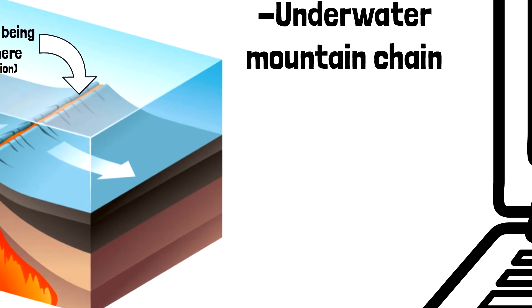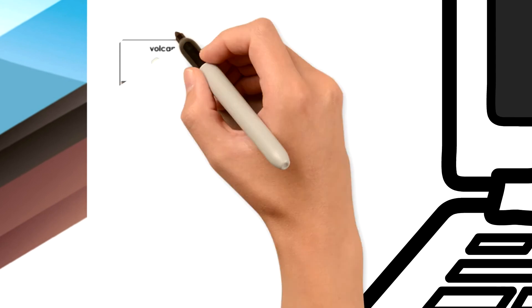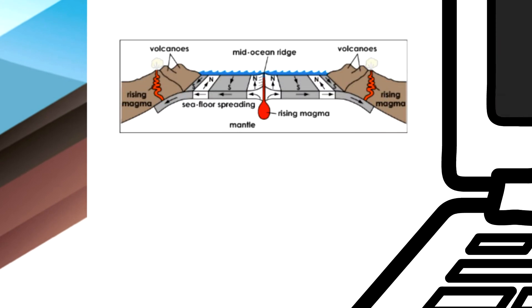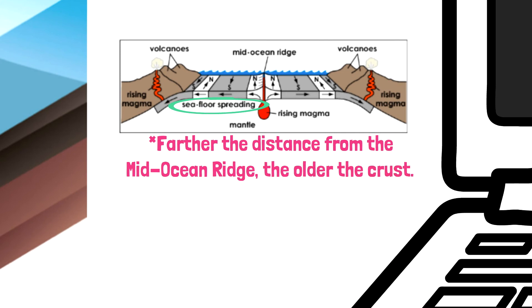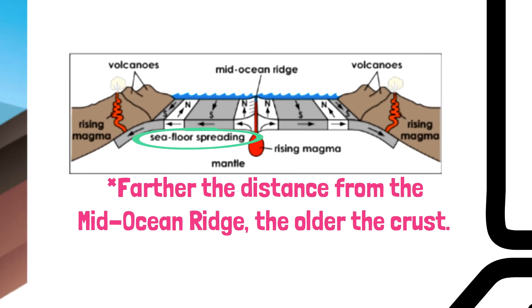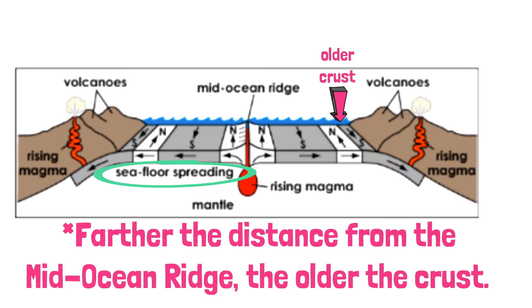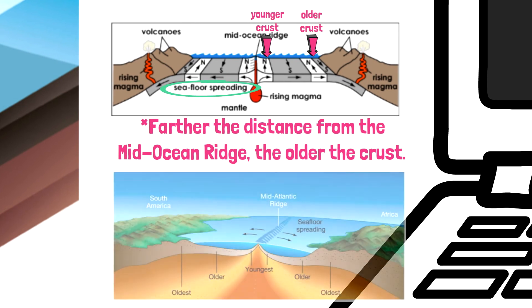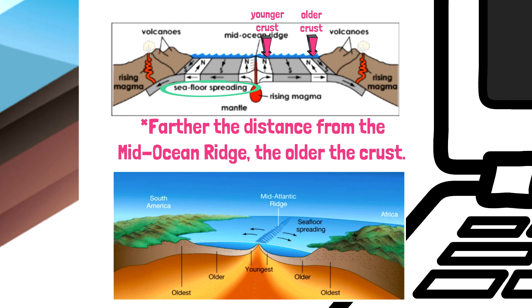Specifically, the mid-Atlantic ridge is responsible for creating new crust in the Atlantic Ocean. As this ridge moves, it creates seafloor spreading. The further the crust spreads out away from the mid-ocean ridge, the older it is. As the seafloor spreads, the continents are also moving as well. Because of this, North America, Central America, and South America are spreading apart from Europe and Africa.